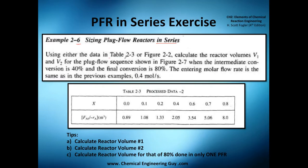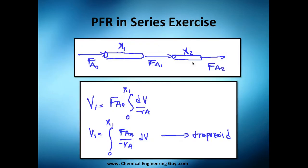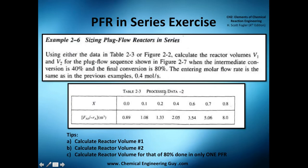Using either data from this or this figure, calculate the reactor volume V1 and V2 for a plug flow reactor sequence shown in figure 2.7, which I don't have, but I draw it. And the first one is going to achieve 40% and the second one is going to achieve until 80%. The total flow rate is this one, so probably you're familiar with this one. We are doing exactly the same one, same conditions, same values, we're just having two PFRs.